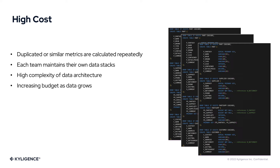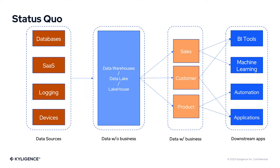So how can we avoid or alleviate those issues? We believe the answer is metric store. Before entering the metric store, let's review the architecture of the current common data analytics platform. In general, data is extracted and loaded from data sources into a data storage layer — it could be a data warehouse, a data lake, or a lake house. At this layer, data can be cleaned and transformed by performing complex SQL tasks. Further, the data can be modeled and processed according to business requirements, thereby generating a data mart containing business metrics. Finally, different downstream applications can choose and consume data accordingly, such as business intelligence tools, machine learning applications, etc.